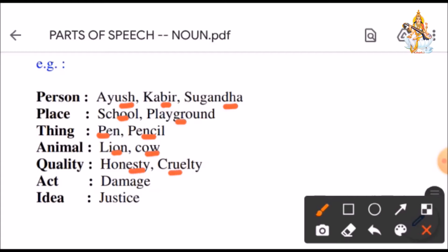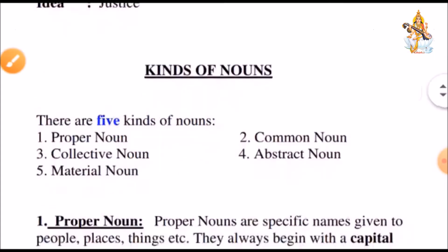Honesty, cruelty, truthfulness, these are qualities. Damage, this is an act. Justice is an idea. So, the definition of noun is clear.